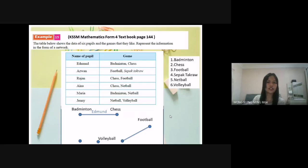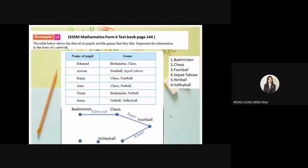Rajan, chess, football. So I connect the vertices chess and football and label it Rajan. Next is Aina likes to play chess and netball. So from chess to netball.